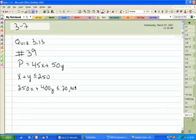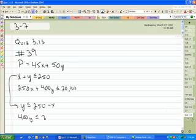So there's only two constraints, one objective equation. We need to get these in a form that we can do on the calculator. So Y will be less than or equal to 250 minus X.